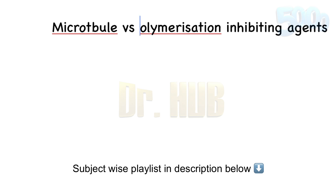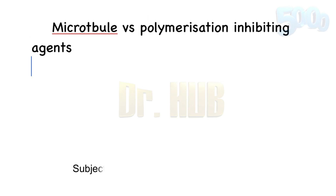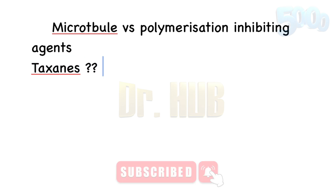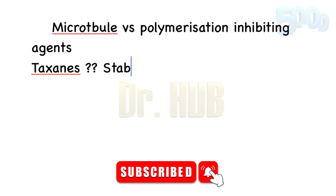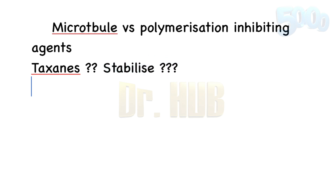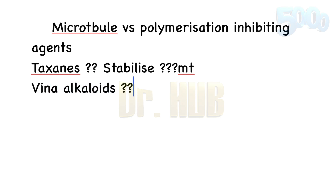So what are the examples? What are the taxins, and what is their use? Taxins stabilize the microtubules — it stabilizes the microtubules. Next we move on to the vinca alkaloids. What is the use of vinca alkaloids?